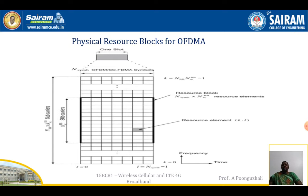A resource block consists of 12 subcarriers and 7 OFDMA symbols. More resource blocks allocated means one slot will consist of more resource blocks. The total number of subcarriers is the number of subcarriers multiplied by the number of resource blocks, giving (N_RB × 12 − 1) total subcarriers in the resource grid.